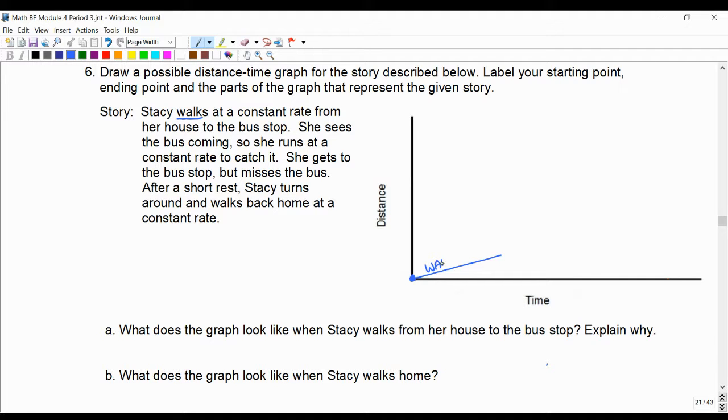And this is her walking where the distance is getting greater. You're using a ruler, and you're just drawing a line that increases, that isn't super steep, labeling it walking, and then stopping so that we have room for the other parts of the story.